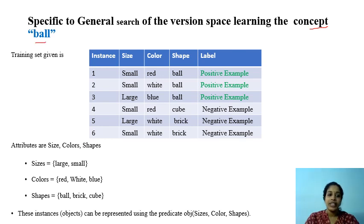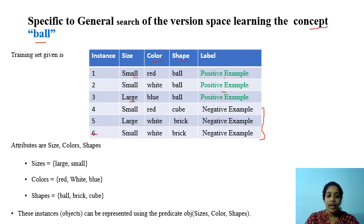We are provided with a training set having six instances — three positive examples and three negative examples. The attributes given are size, color, and shape. Size can take values small and large; color can take values red, white, and blue; and shape can take values bowl, cube, and brick. Each instance is represented as a tuple of these three attributes.